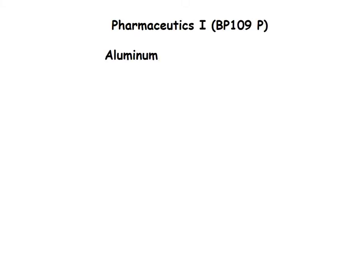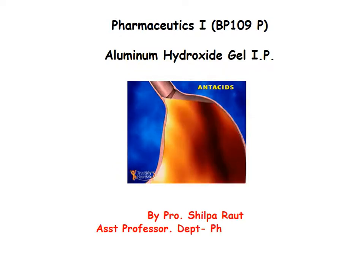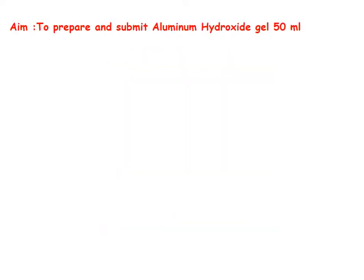Welcome, dear student. Today we are going to see how to prepare Aluminium Hydroxide Gel IP. This Aluminium Hydroxide Gel is used as an antacid. Aim: to prepare and submit Aluminium Hydroxide Gel 50 ml.